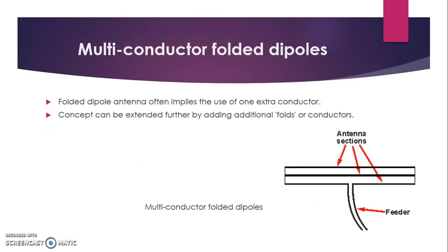Now we will see the multi-conductor folded dipole. The folded dipole antenna often implies the use of one extra conductor. This concept can be extended further by adding additional folds or conductors, as you can see in the figure. It shows the multi-conductor folded dipole, with the antenna section and the feeder visible in the diagram.